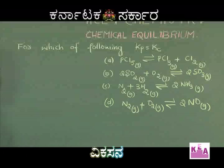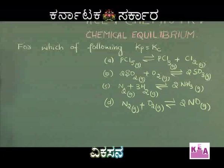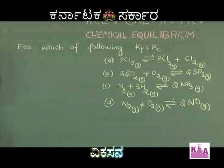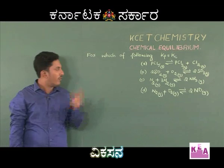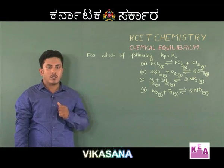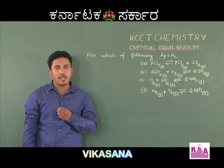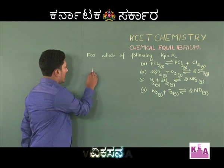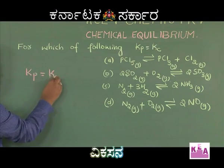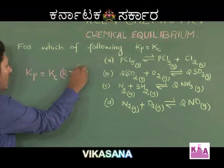This question is related to the relation between Kp and Kc. For which of the following is Kp equal to Kc? Option A: PCl₅ in equilibrium with PCl₃ plus Cl₂. Option B: 2SO₂ plus O₂ in equilibrium with 2SO₃. Option C: N₂ plus 3H₂ in equilibrium with 2NH₃. Option D: N₂ plus O₂ in equilibrium with 2NO. Kp is related to Kc as Kp = Kc·(RT)^ΔN.